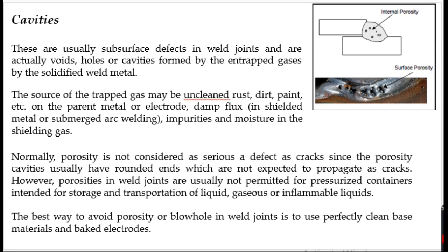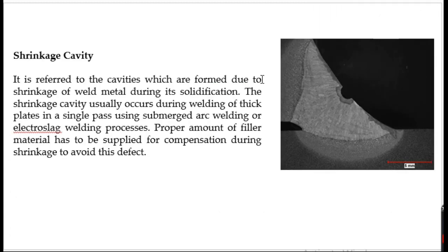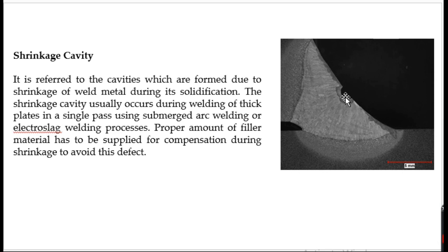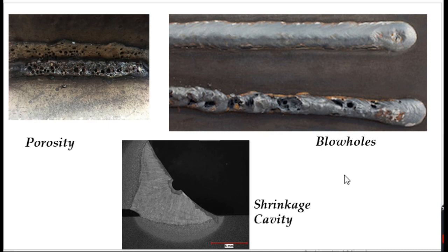The third type of cavity is shrinkage cavity — cavities formed due to shrinkage of the weld metal during solidification. In a T or I joint, if the deposited weld metal is inadequate, a cavity forms on the weld bead during solidification due to shrinkage. To avoid shrinkage cavity, ensure the proper amount of filler material is supplied so that even after shrinkage no cavity forms. If filler is inadequate, the cavity acts as a stress concentration site from which transverse or longitudinal cracks may start.